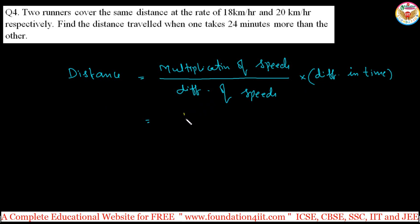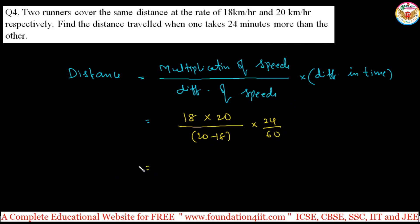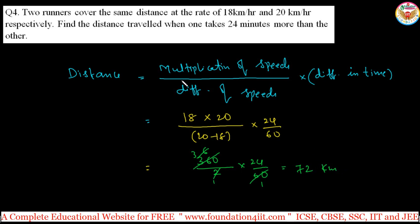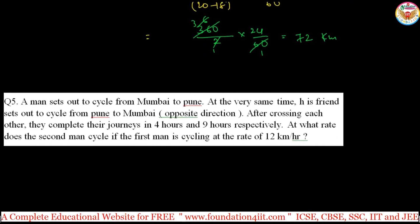One runner is at 18 km/h and the other at 20 km/h. The difference in speeds is 20 − 18 = 2. The time difference is 24 minutes, converted to hours as 24/60. So: (18 × 20) / 2 × (24/60) = 360/2 × (2/5) = 180 × 2/5 = 72 kilometers. That is the distance — apply this direct formula and remember it.